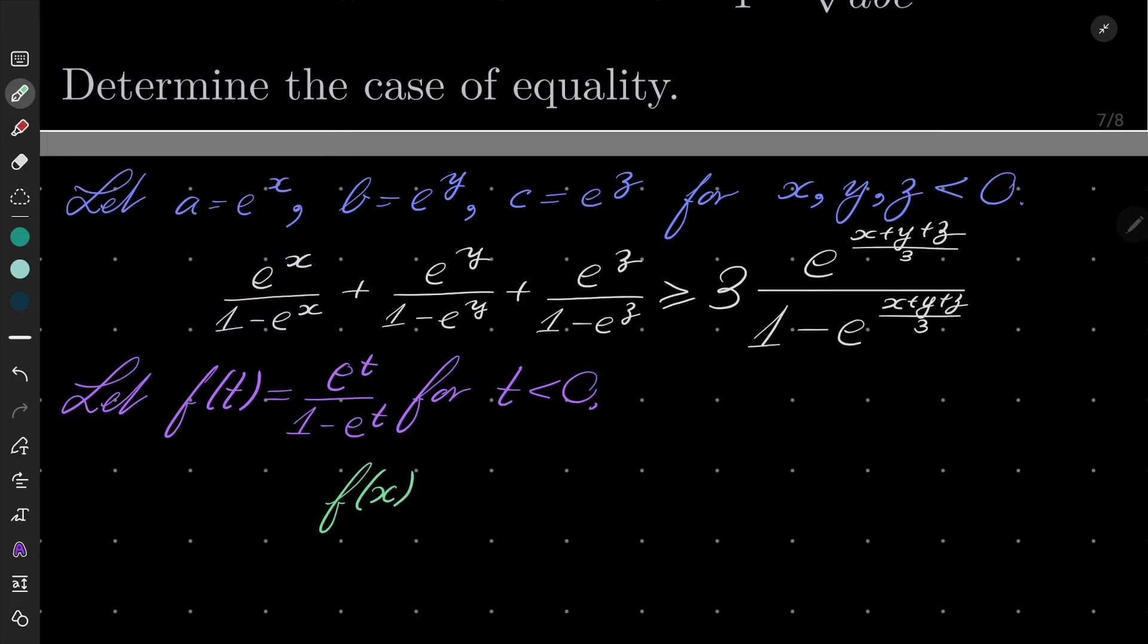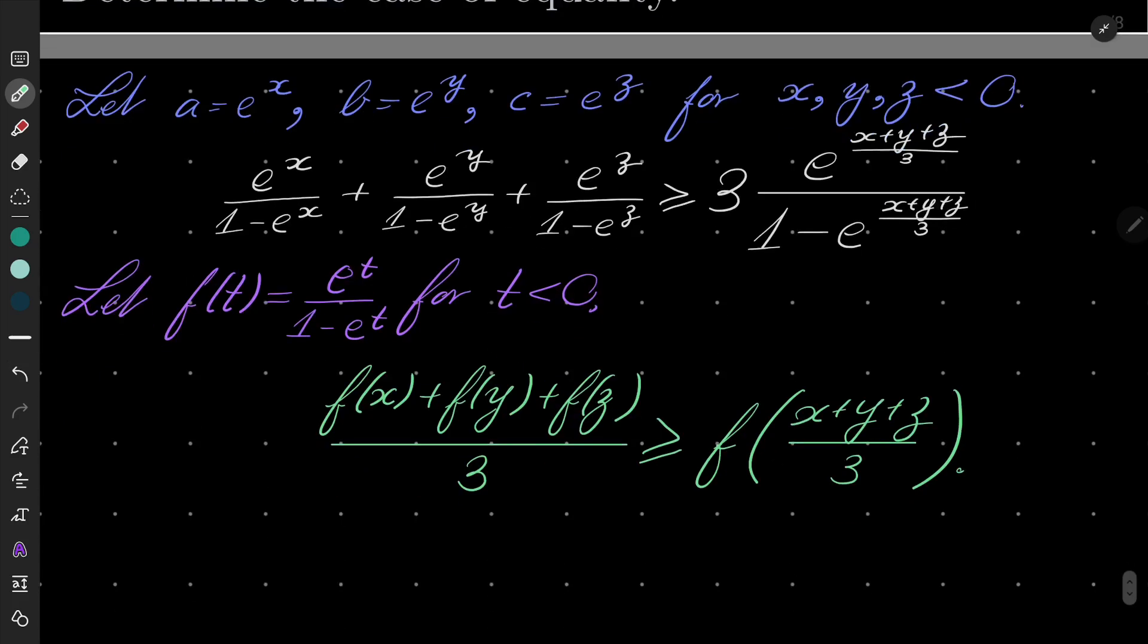So our inequality becomes f of x plus f of y plus f of z over 3 greater than or equal f of x plus y plus z over 3. Okay, how to prove it? Well, bells should be ringing if you know Jensen's inequality.